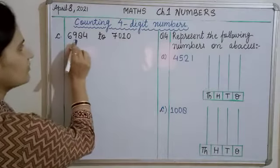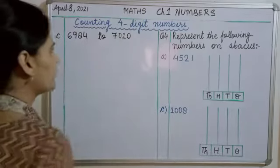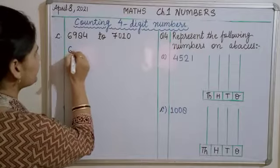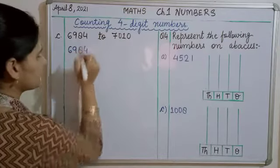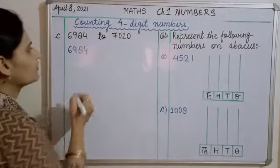We have to count numbers from 6984 to 7010. Okay? Tho is number se hum start kare ghe. 6,984. Yaha se start kia. Ab mujhe pacha hiya next number. Tho bas four me one kare to ho, four ban chayega five.